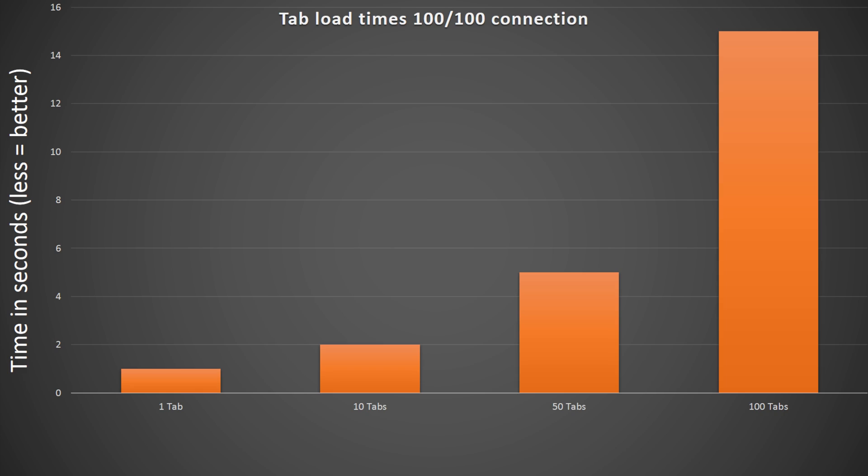The first set of tests were pretty simple — close the web browser, make sure it wasn't running in the background by killing it in Task Manager, then click the icon and let everything load up. Here are our first set of numbers: not really that much of a difference. With our 100 by 100 internet connection we weren't really seeing too much difference between the slowest and fastest load times. Don't get me wrong — one tab versus 60 tabs was definitely a big difference.